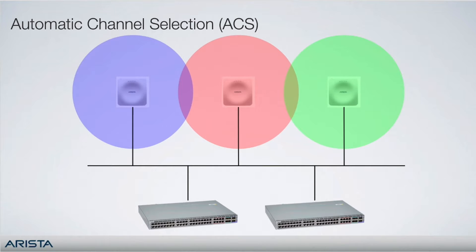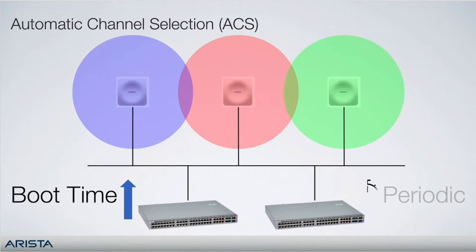Channel selection is important to avoiding interference. What makes things more difficult is that in the world of wireless, change of RF environment over time is almost a guarantee, which may result in a need to change channels for optimal performance from time to time. Automatic channel selection, or ACS, has two aspects to it: boot time and periodic.